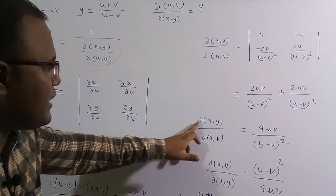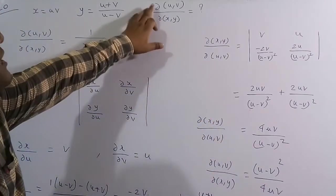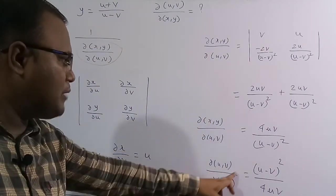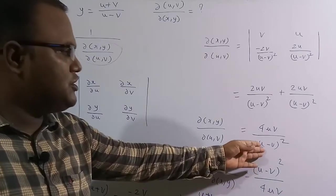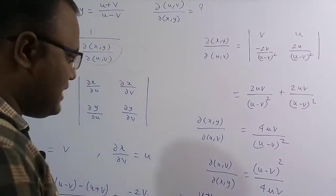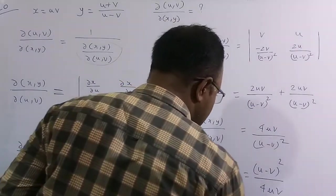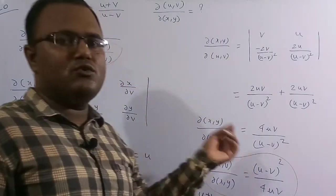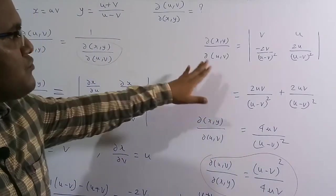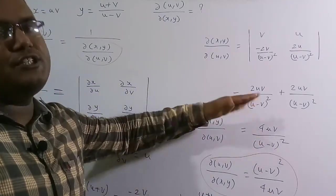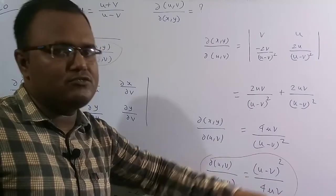Since we need ∂(u,v)/∂(x,y), we take the reciprocal: 1/[4uv/(u−v)²] = (u−v)²/(4uv). Therefore ∂(u,v)/∂(x,y) = (u−v)²/(4uv), which is option A. By this lecture we have successfully completed the 2021 General Studies problems in a detailed manner.